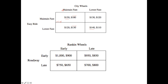Finally, let's look at the fourth example: Roadway and Ranking Wheels, who can either be early or late. If Ranking Wheels definitely goes early, Roadway goes early as well because 1,000 is greater than 750. Going to the right side, Roadway again goes early because 950 is greater than 700. For Ranking Wheels, if Roadway goes early, Ranking Wheels goes early because 900 is greater than 850. If Roadway goes late, Ranking Wheels goes late as well. Roadway has a dominant strategy — no matter what Ranking Wheels does, Roadway will always play early.